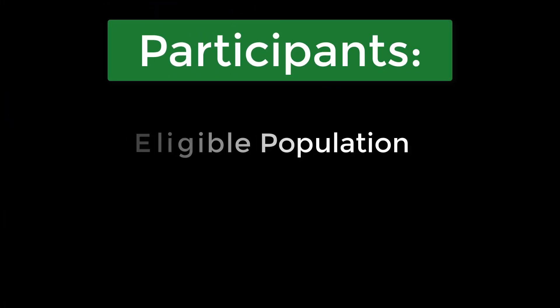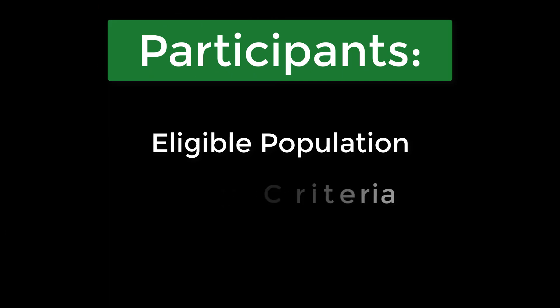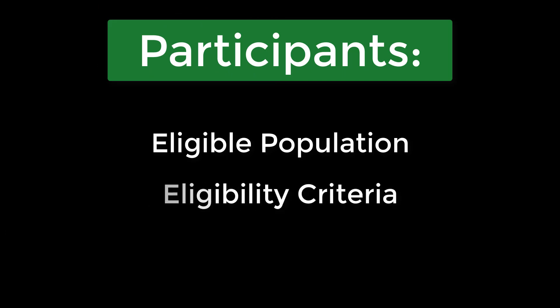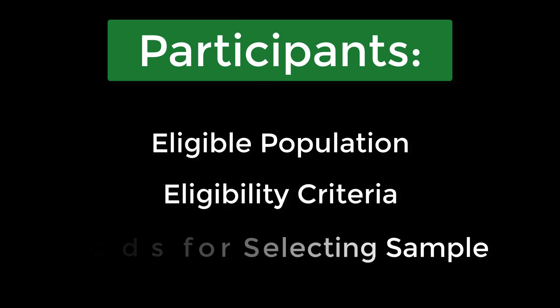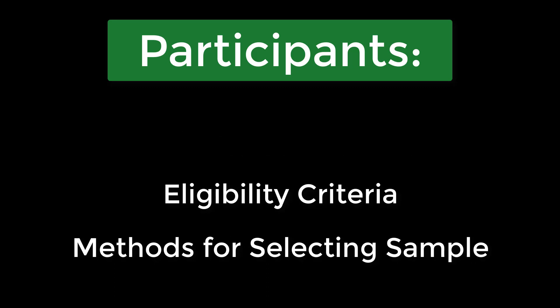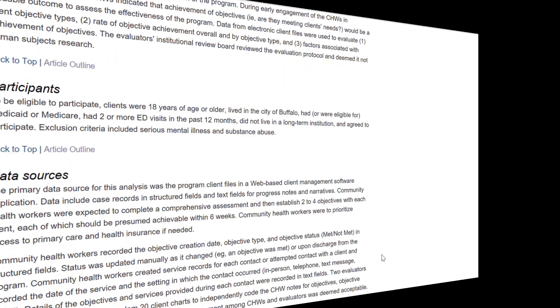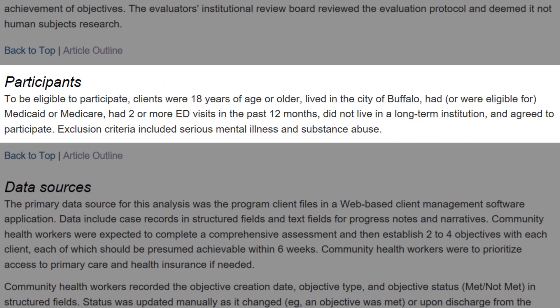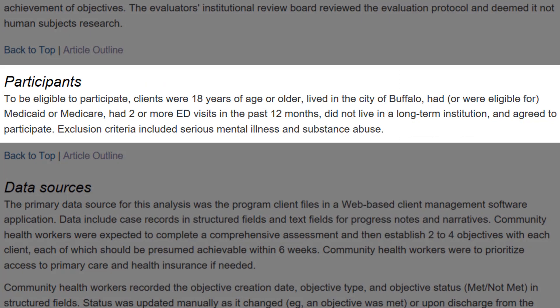You want to describe the eligible population, eligibility criteria, and methods for selecting the sample. You'll want to be careful not to use words like 'a random sample' when you really have a convenient sample. Indicate any exclusion criteria that impact the final sample size.